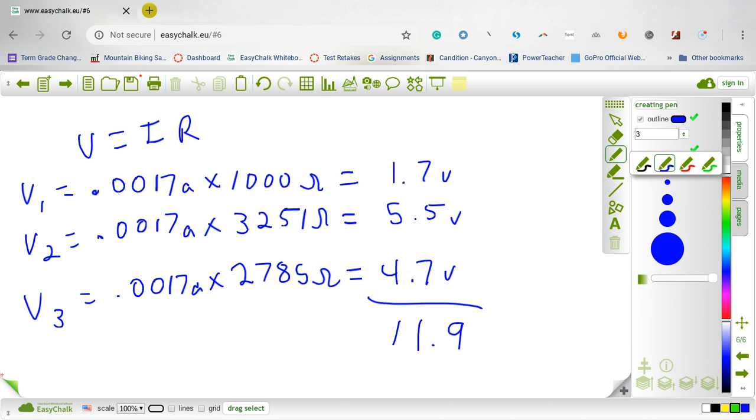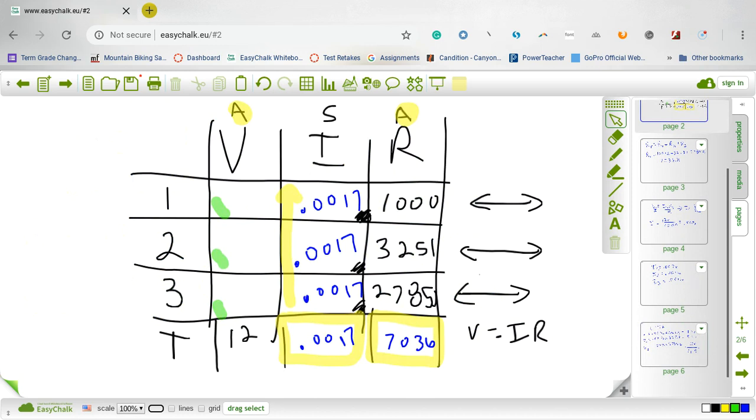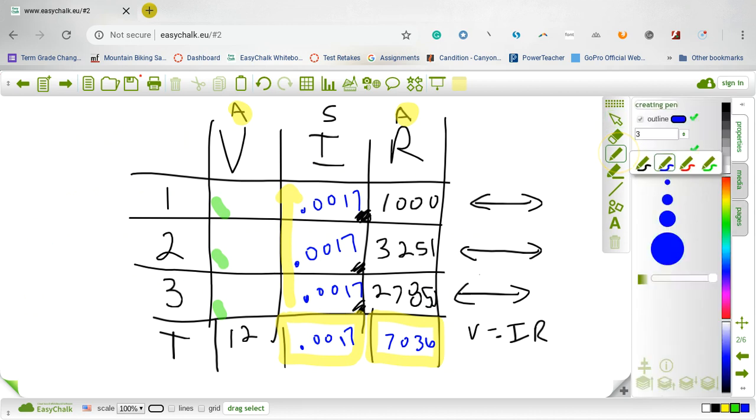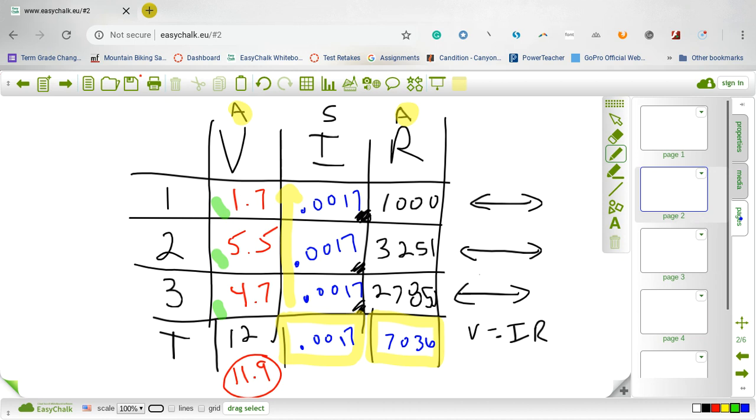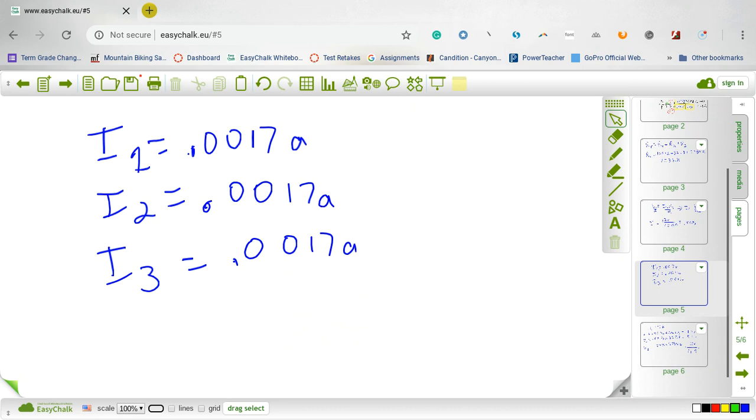So my total voltage here when I add them up is 11.9. I had 1.7, 5.5, and 4.7, so it comes out to be 11.9. That's pretty good. That checks us out, that makes me feel confident that my answers are right because everything works out. That makes it easy. I'll give you another video to show you how to do it with parallel.